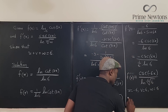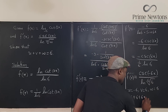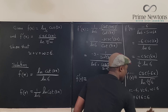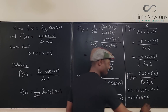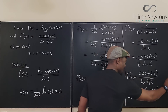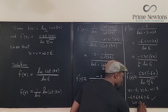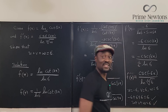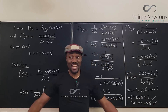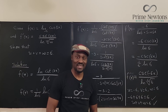Therefore, u plus v plus w equals 6. Check, check, check. Never stop learning — those who stop learning, stop living.